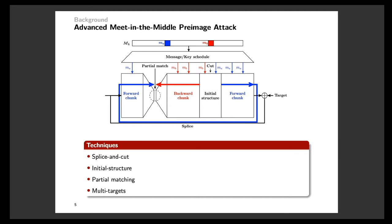The next technique is partial matching. In the meet-in-the-middle approach, the final phase of the attack involves the full-state matching between two states, while partial matching only checks one or several words between the two states. In this way, the required independent computations can be expanded by more steps. The last technique is the multi-target scenario. Instead of only one target, the attacker can introduce more targets in an attack, which can directly provide additional freedom to one chunk without influencing the other one.